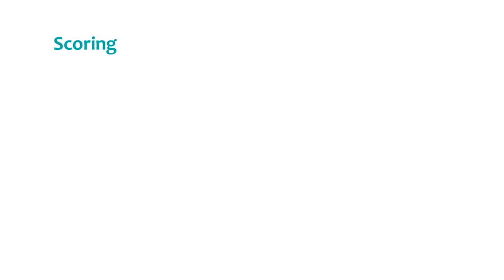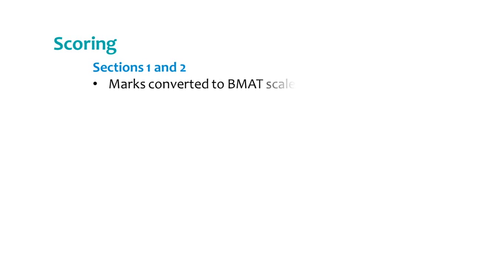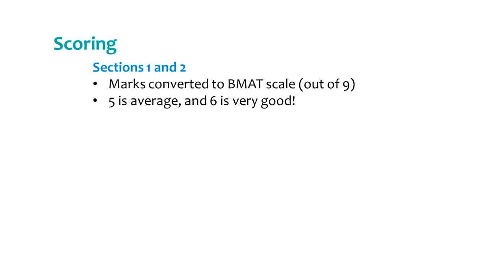Now let's have a look at how the BMAT is scored. Each section of the BMAT is scored separately, so your final score will be in three parts. For sections 1 and 2, the multiple choice questions, your raw marks are converted to the BMAT scale, so your final score for each section will be given out of 9. Generally speaking, a 5 is average and corresponds to about half the raw marks, a 6 is very good, and a 7 or above is downright exceptional, although how this affects your application will often depend on how well everyone else did.